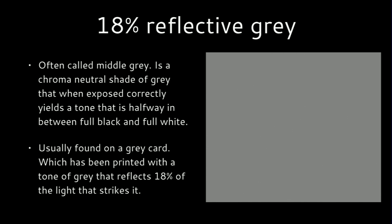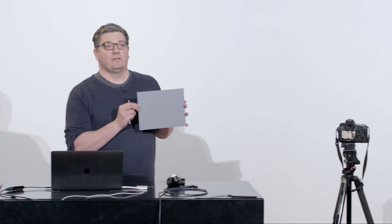18% reflective gray is often termed 'middle gray.' When photographed and exposed properly, it forms the middle value between absolute white and absolute black in your image. It's a very handy reference tone, and it's usually found on a gray card like this, which reflects back 18% of the light that strikes it.